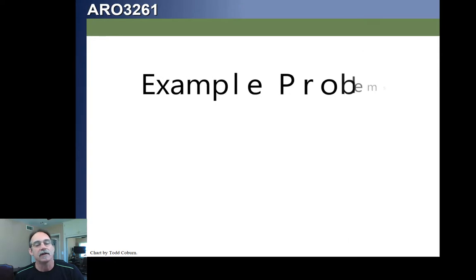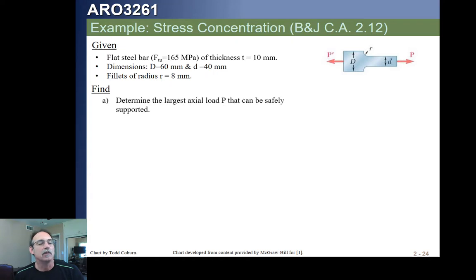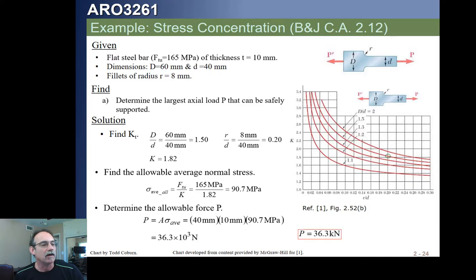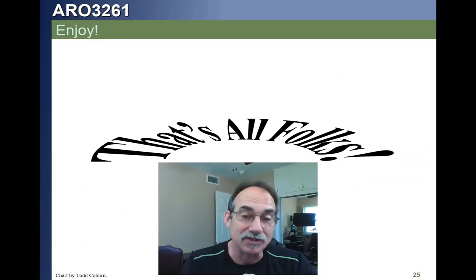If we have a part like this, we've got two methods to calculate it: the Beer and Johnston curve and the handbook appendix solution. Note they call it average stress while we call it net stress — both terms are used commonly. Make sure you study these concepts. Enjoy.